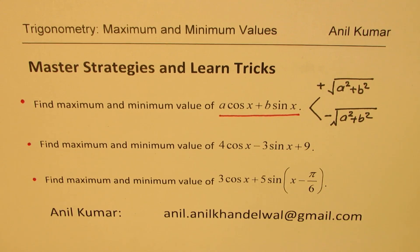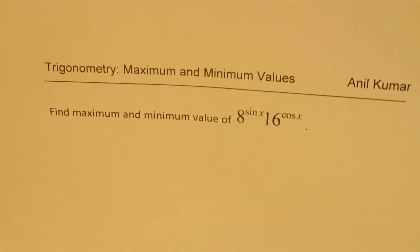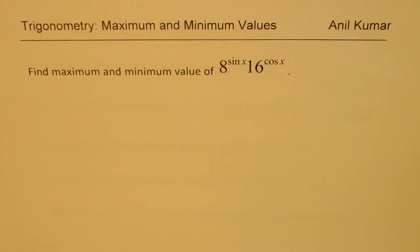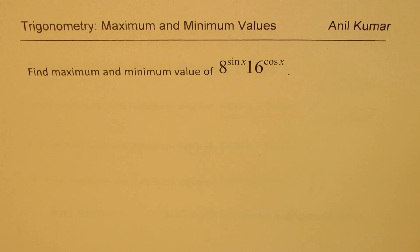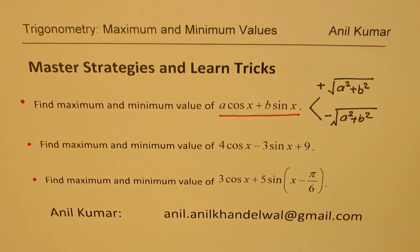We could actually have other forms of this equation also. One such form is to find the maximum and minimum of 8 to the power of sin x times 16 to the power of cos x — it also falls under the same category. Now let's see how to solve these questions one by one.